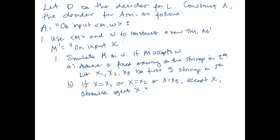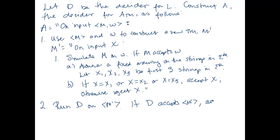After constructing M', we use our decider D for L. We run D on the description of M'. D can tell us whether the language of M' has size three. If it does, that means M accepted w. So if D accepts ⟨M'⟩, then accept; else reject.